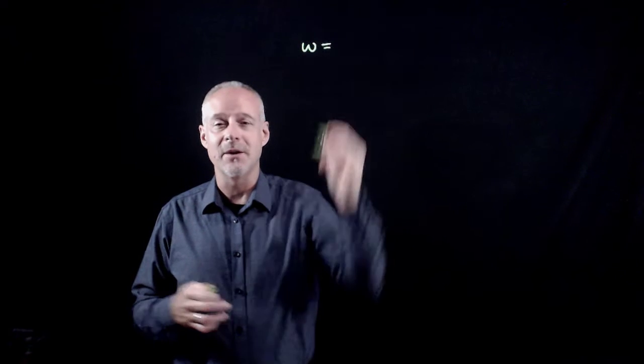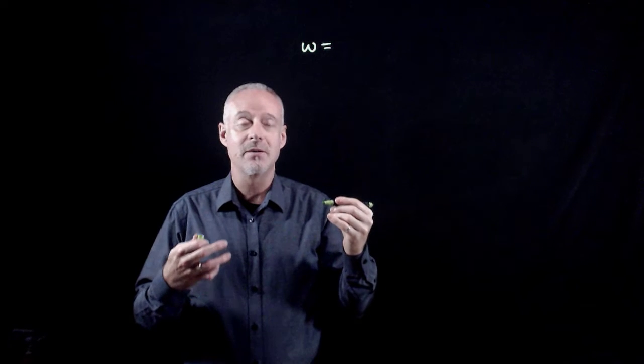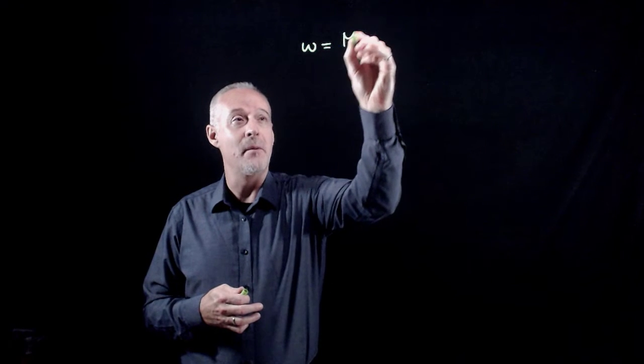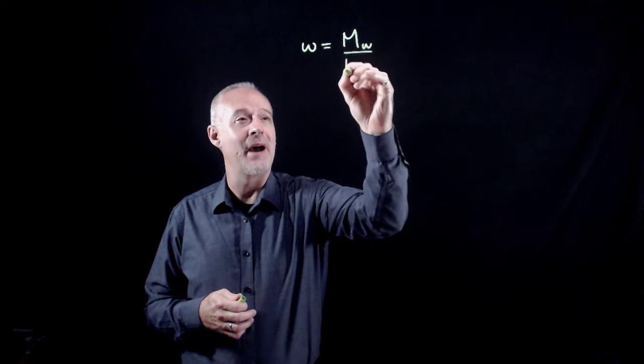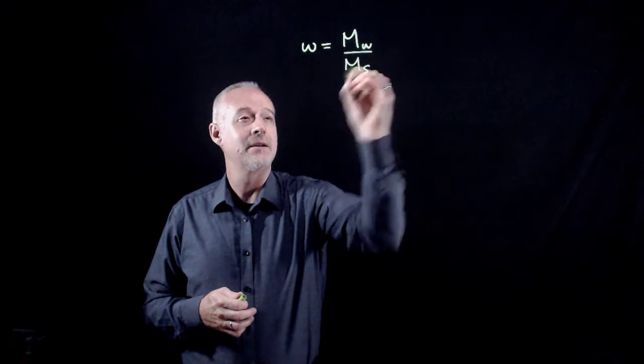Just by way of refresher, we calculate the water content in a soil sample as the ratio of the mass or weight of water divided by the mass or weight of solids.